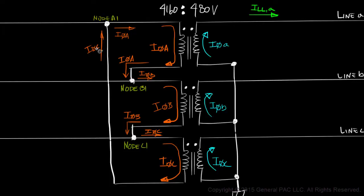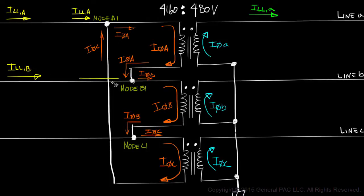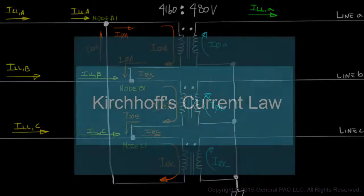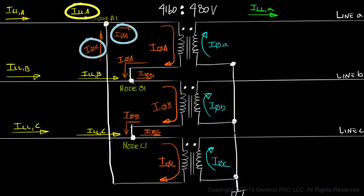Now that we've illustrated Phase Currents, let's quickly label our Line Currents. From Part 3, we know that Line Current A will flow through Line A into the bushing of winding A, and finally into Node A1. Similarly, Line Current B will flow through Line B into the bushing of winding B, and finally into Node B1. And lastly, Line Current C will flow through Line C into the bushing of winding C, and finally into Node C1.